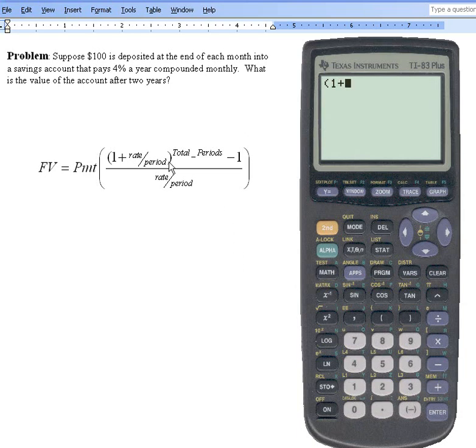1 plus, now what's the rate per period? Well, the annual rate is 4%, 0.04, and we want to divide that by 12 because there's 12 months in a year.